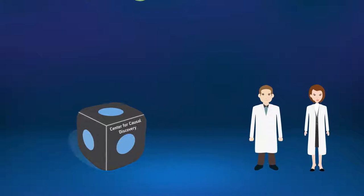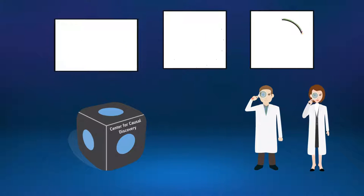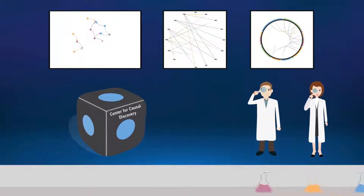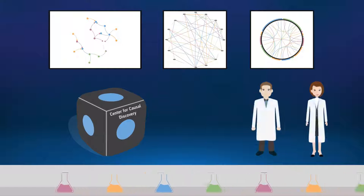The causal networks output by these algorithms can support scientific discovery in many ways. For example, out of the enormous number of experiments that could be performed, these causal networks can help scientists decide which ones to perform next.